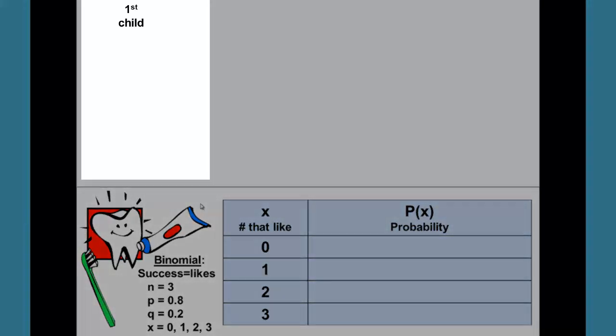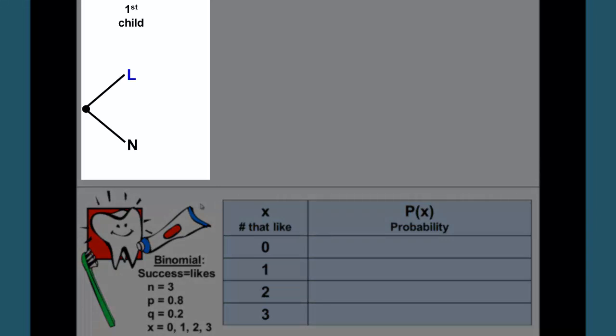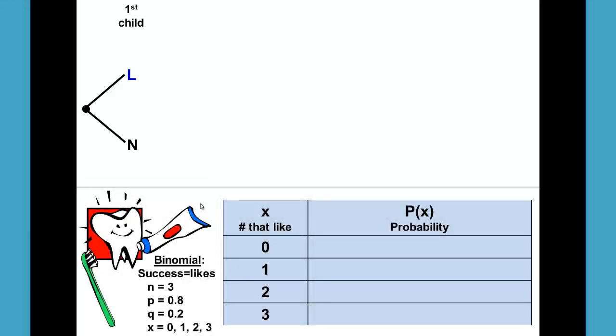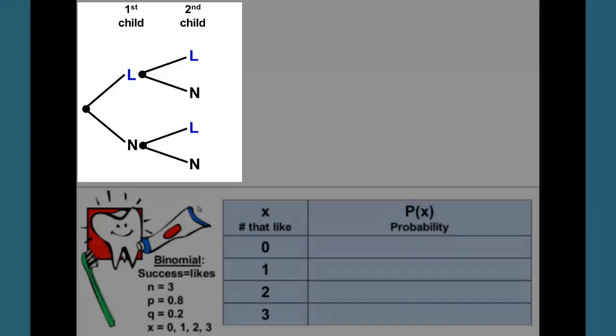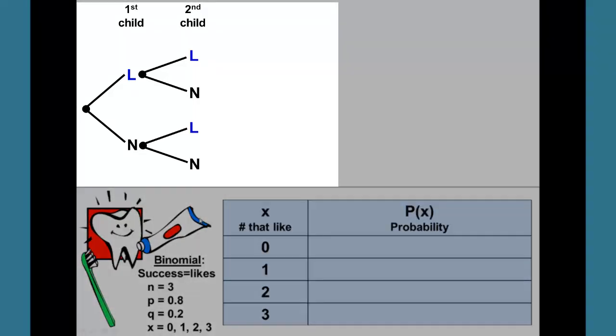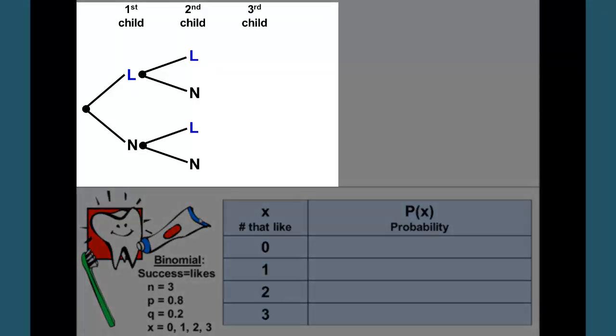The first child chosen can either like or not like the toothpaste. The second child is then chosen and that child will either like or not like the toothpaste and follow the first child. The third child then has the same option of liking or not liking and follows any of the four that we got with the second.